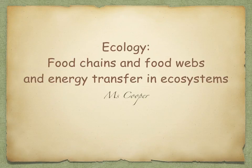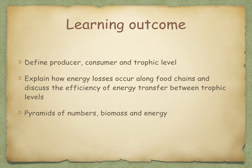In this topic we're going to look at food chains and food webs, and energy transfer in ecosystems. By the end of this topic you should be able to define a producer, consumer, and trophic level, and explain how energy losses occur along a food chain and discuss the efficiency of energy transfer between trophic levels. We're also going to look at pyramids of numbers, biomass, and energy.